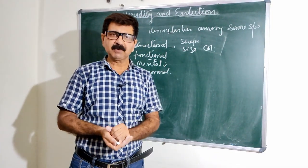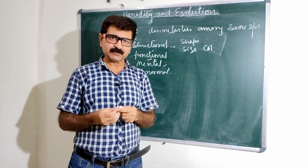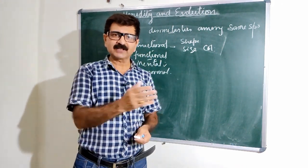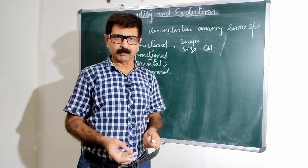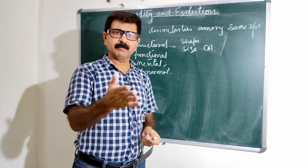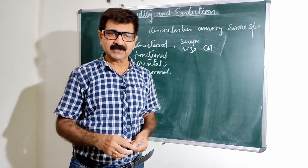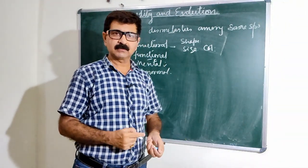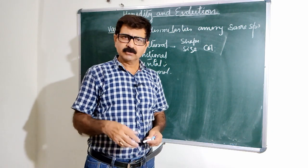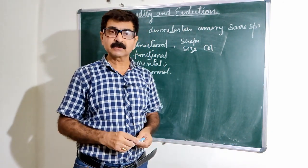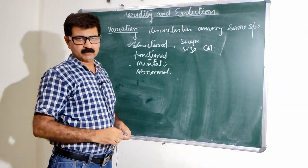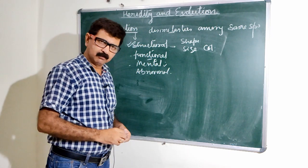The last type is abnormal variations. Sometimes these variations may be a kind of disease, especially diseases found on chromosomes — due to changes in chromosomes, like Mongoloid disease, Turner syndrome, and Klinefelter syndrome. These diseases occur due to changes in chromosome number. Also, besides male and female, our society has a third gender, which is also because of chromosomes.